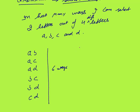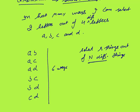The formula is like this. If you want to select R things out of N different things, the formula is NCR. This says that N factorial upon N minus R factorial into R factorial. This is the basic formula.